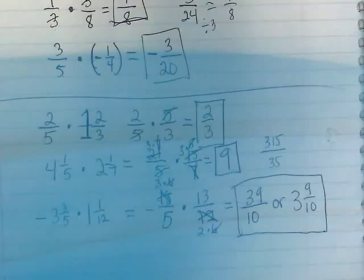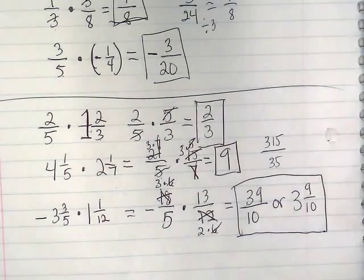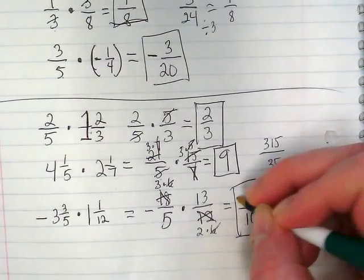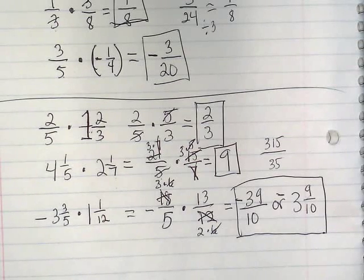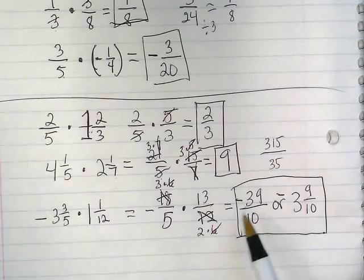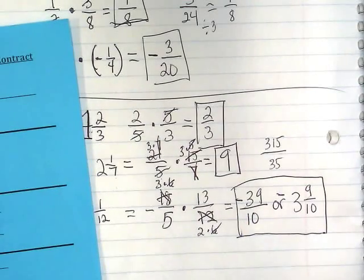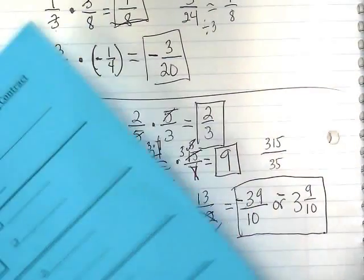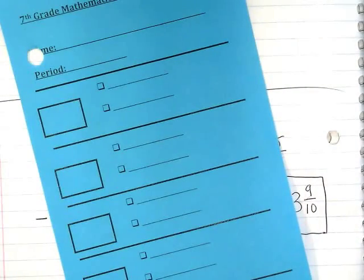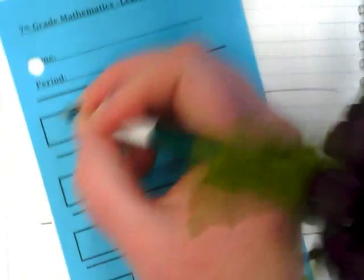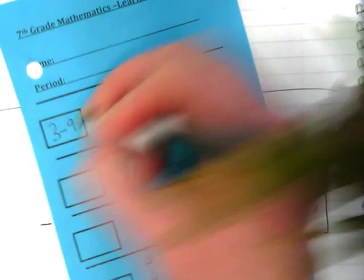I can leave this as an improper fraction, or I can show that this is 3 and 9 tenths. Oh, thank you, Riley. Yes, it's a negative. I forgot it, even though I reminded us to be careful of forgetting it. Okay, so we have 3 and 9 tenths with a negative or a negative 39 over 10. So you guys are going to do some practice today on problems like this.